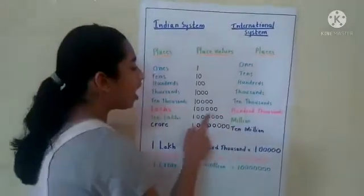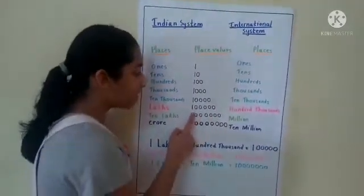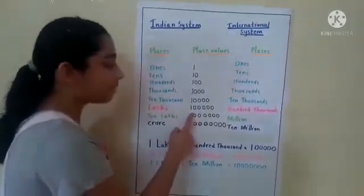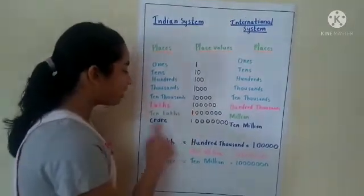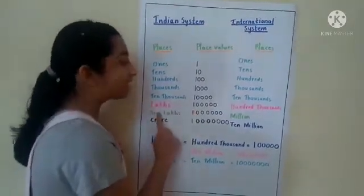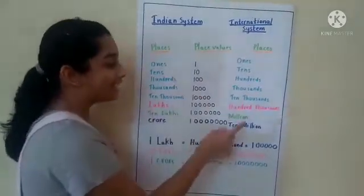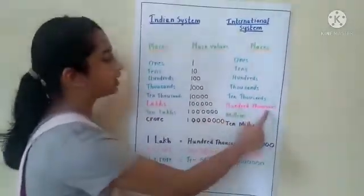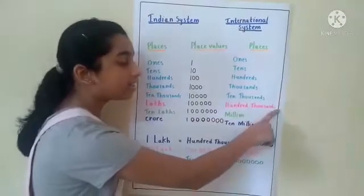Here are 5 zeros. In the Indian System of Numeration, we call it Lakhs, and in the International System, we call it Hundred Thousands.